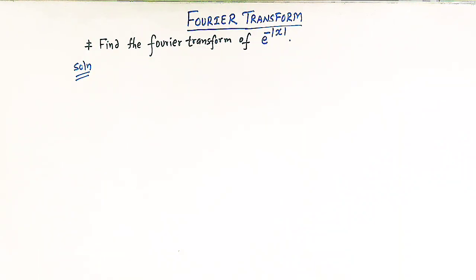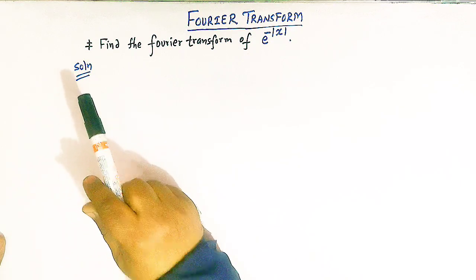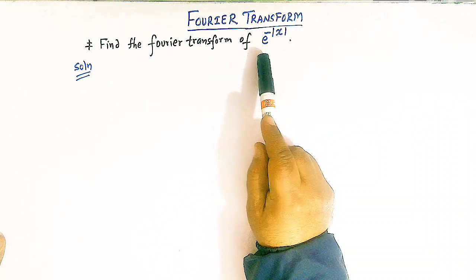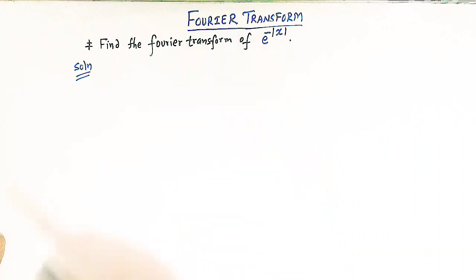Hello viewers. In today's session we are going to discuss an important problem from Fourier transforms. We are going to find out the Fourier transform of the function e raised to a negative of mod of x. So let us start.